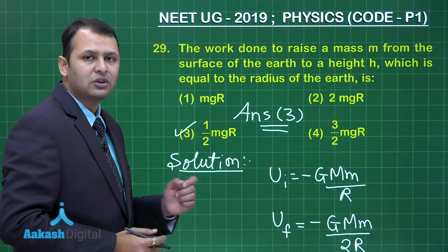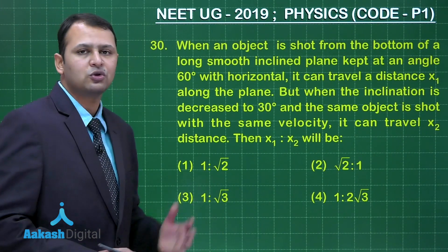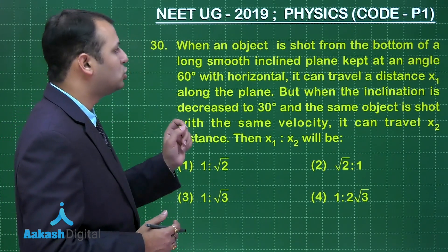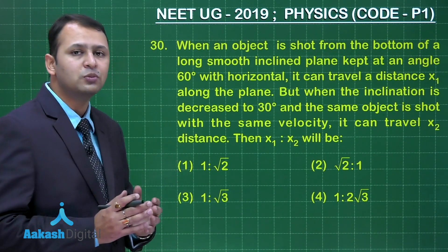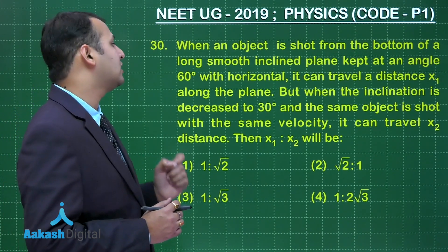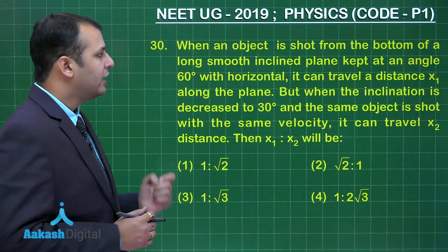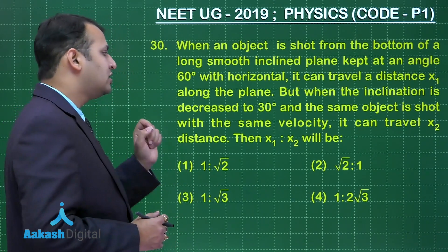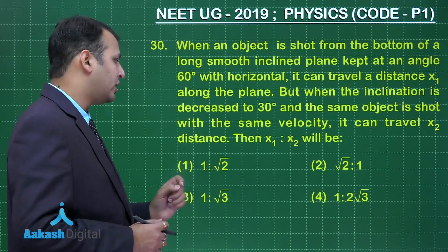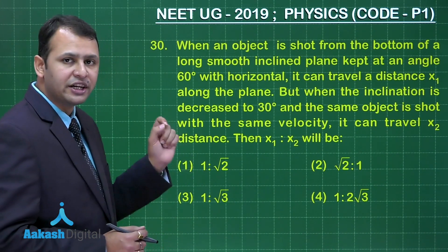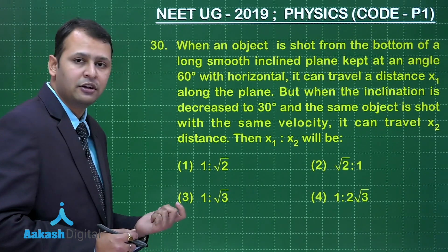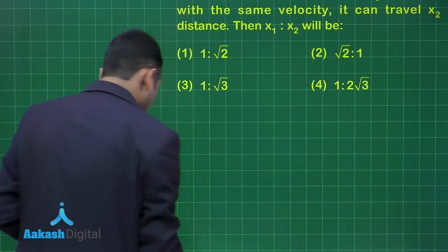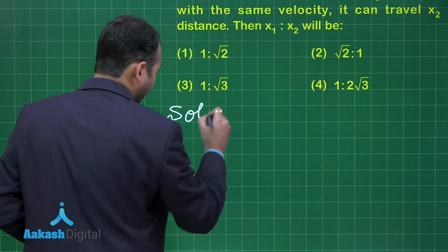Now let's move on to question number 30. The question belongs to chapter Motion in a Plane. As per the question, when an object is shot from the bottom of a long smooth inclined plane kept at an angle of 60 degrees with horizontal, it can travel a distance x₁ along the plane. But when the inclination is decreased to 30 degrees and same object is shot with same velocity, it can travel x₂ distance. We have to find the ratio of x₁ and x₂. It's a very easy question. Let's first understand the basics behind it.